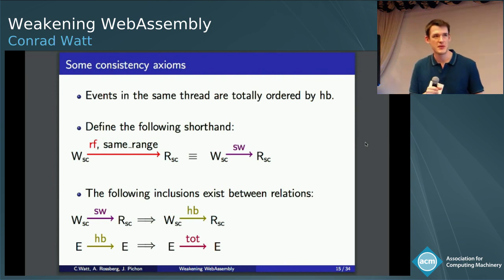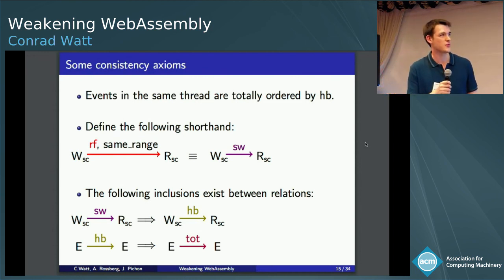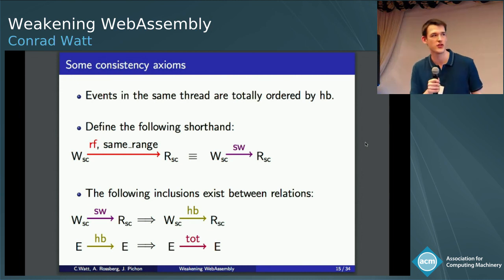So as I said, HB is this really strong synchronization relation. I'll go through some preliminary definitions first. So in the same thread, events are totally ordered by HB. So if you have one access and another access in the same thread, you have an HB relation between them automatically. We also, just for convenience, define a shorthand where we say two accesses synchronize with each other if there's a reads-from relation between two SC atomics of the same size. And then finally, we just say the following inclusions exist between relations. Synchronize-with implies happens-before, and happens-before implies total order.